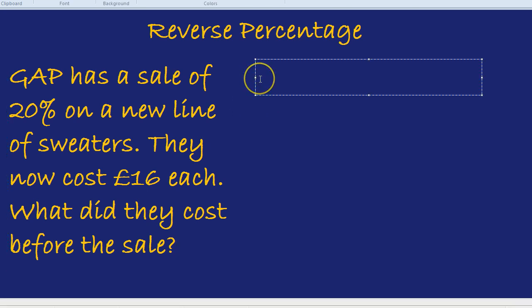So the new price, which is £16, is not the original 100% — it's now only 80% of the original. Our challenge is to get back from that 80% new price to the 100% original price. Remember, you can't just take away or add. If we added 20% to 80% to get to 100%, we'd only be adding 20% of the 80%, and 20% of 80% is not the same as 20% of 100%. So you would not get back to 100% by just adding 20% to £16. We have to divide and multiply to get back to 100%.